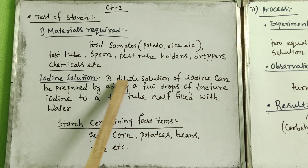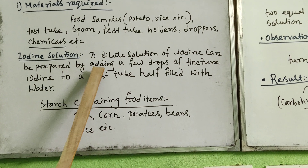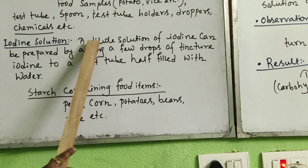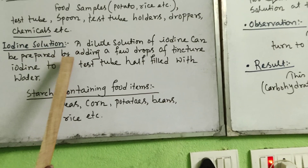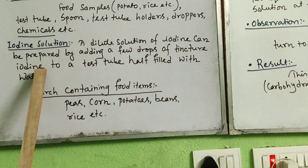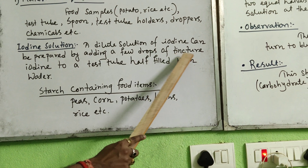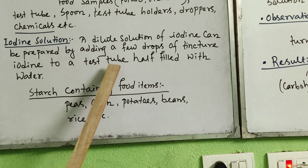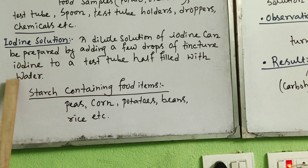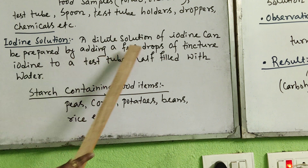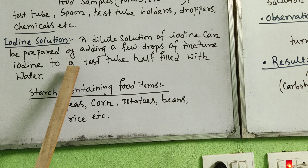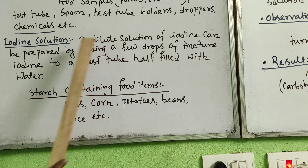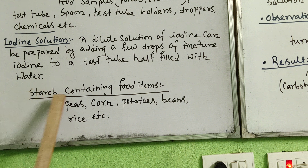A dilute iodine solution can be prepared by adding a few drops of tincture iodine to a test tube half-filled with water. Tincture iodine is concentrated — the density is high — so you add water to make it dilute. This is the process of going from concentrated to diluted iodine solution.